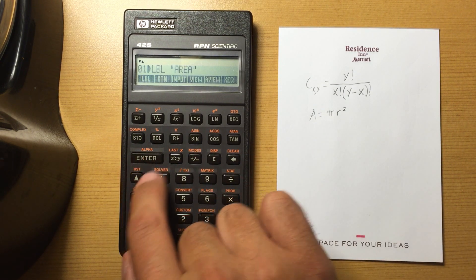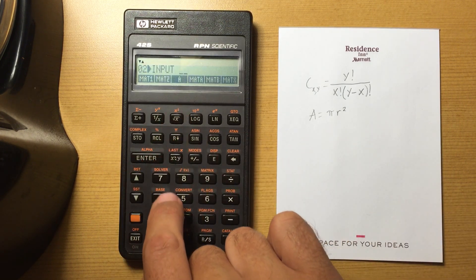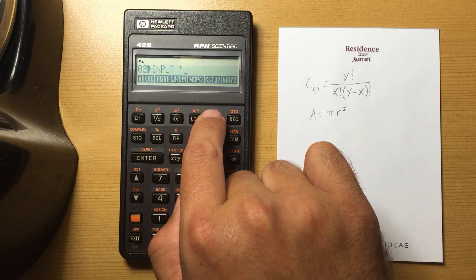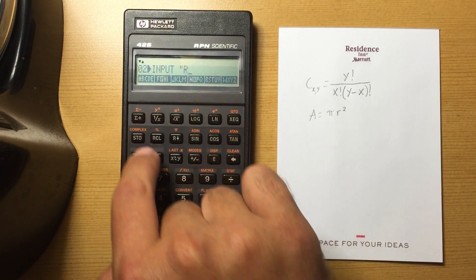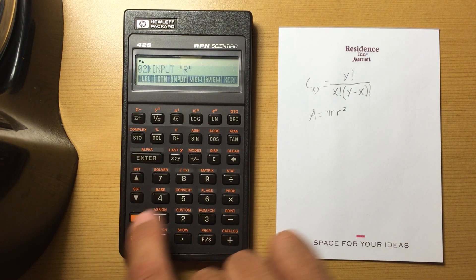Now I am going to input, that will ask the user for r. So I just hit enter to go to the alpha menu. R, enter.